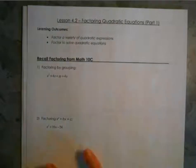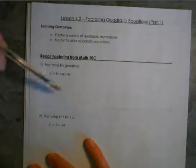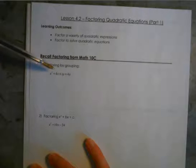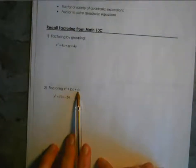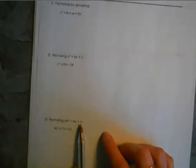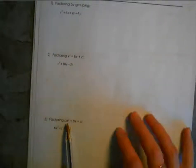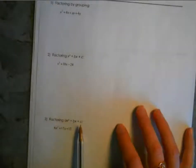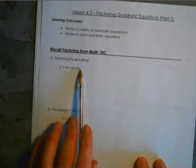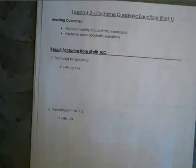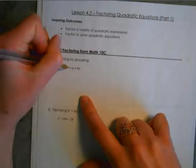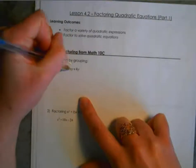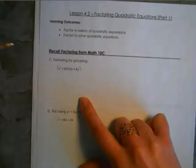The first one we're looking at is factoring by grouping. This is really convenient for polynomials that have more terms than the standard kind — you might recognize terms like x squared plus bx plus c, or ax squared plus bx plus c. Traditionally we stick with about three terms in a polynomial, so when you have more than that, grouping can help. We take the first two sets of terms and group them together, then the second two sets of terms and group them together.